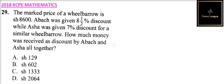How much money was received as discount by Abach and Asha all together? So what you need is to find a discount, 8.5% of 8,600. We add to 7%. So this is how you do it.